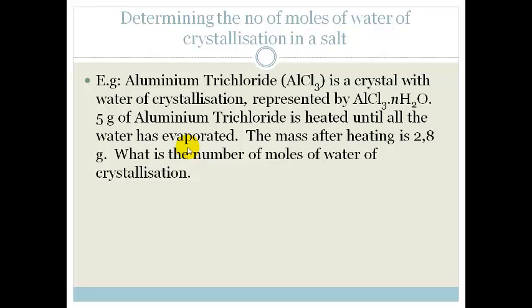So now the type of question you're going to get on this is, they're going to say determine the number of moles of water of crystallization in the salt. Aluminium trichloride, AlCl3, is a crystal with water of crystallization, represented by AlCl3.nH2O. So what we're going to be looking for is n here. 5 grams of Aluminium trichloride is heated until all the water is evaporated. The mass after heating is 2.8 g. What is the number of moles of water of crystallization?